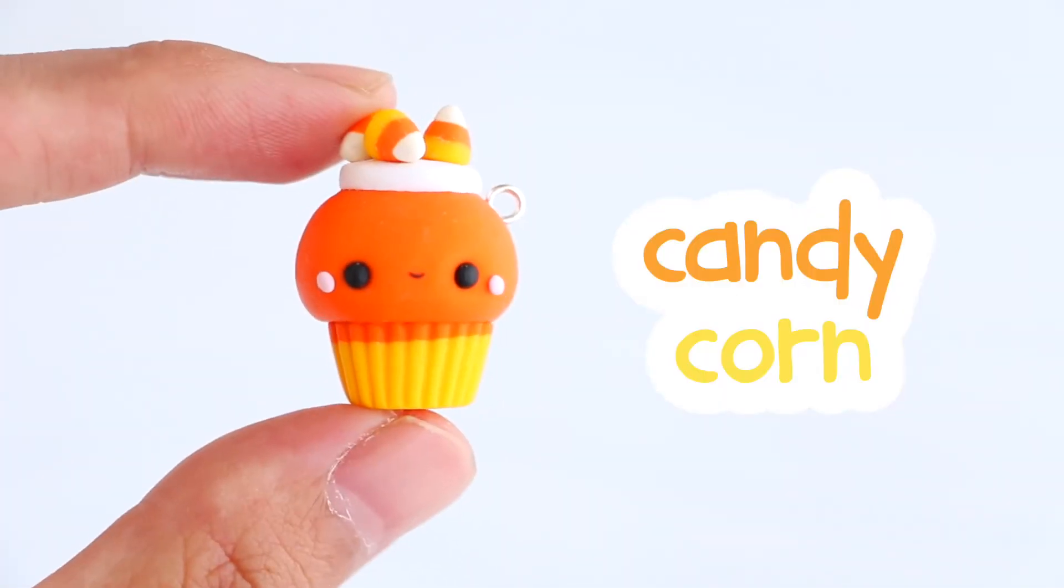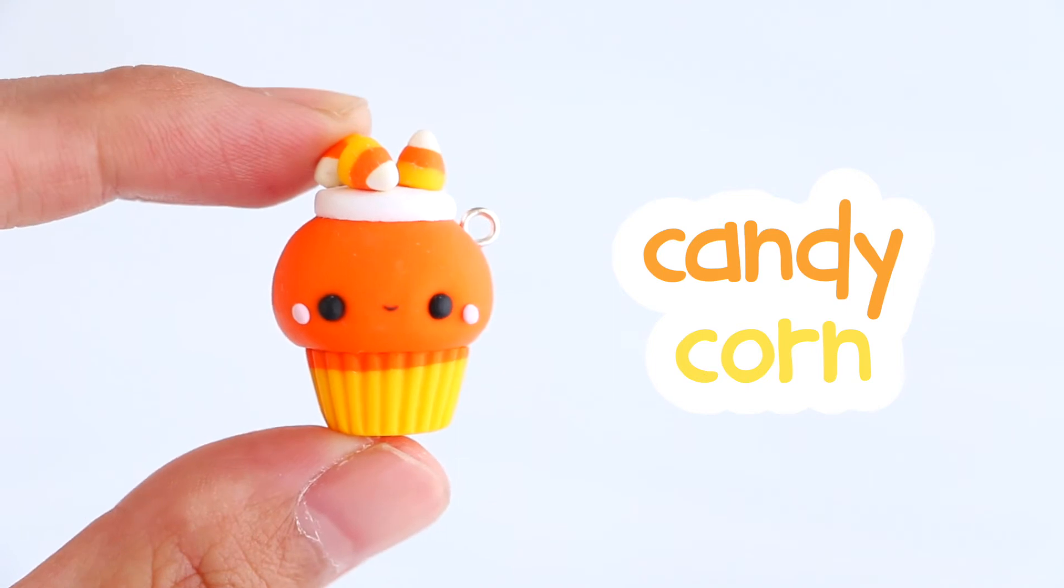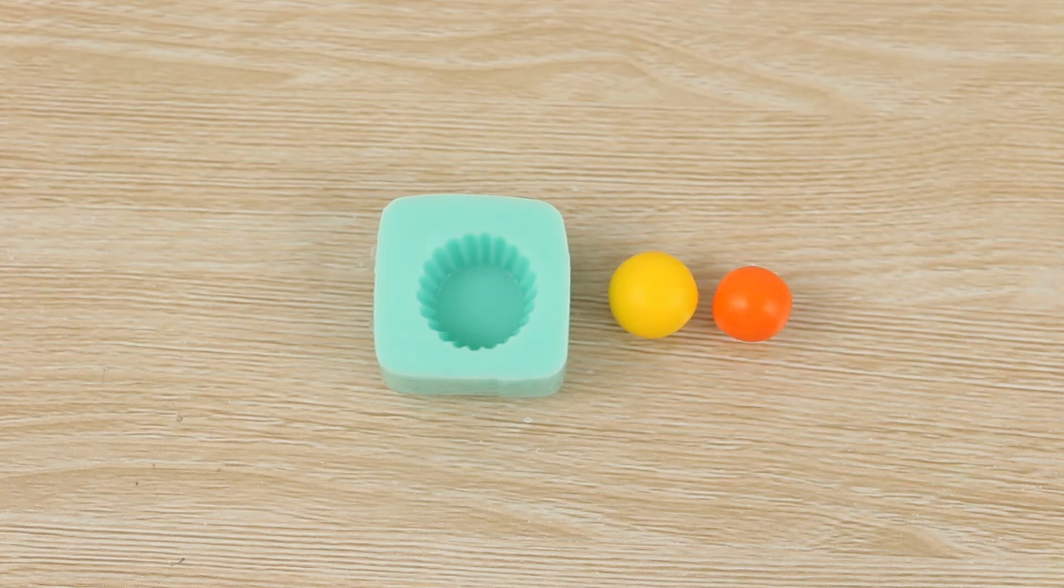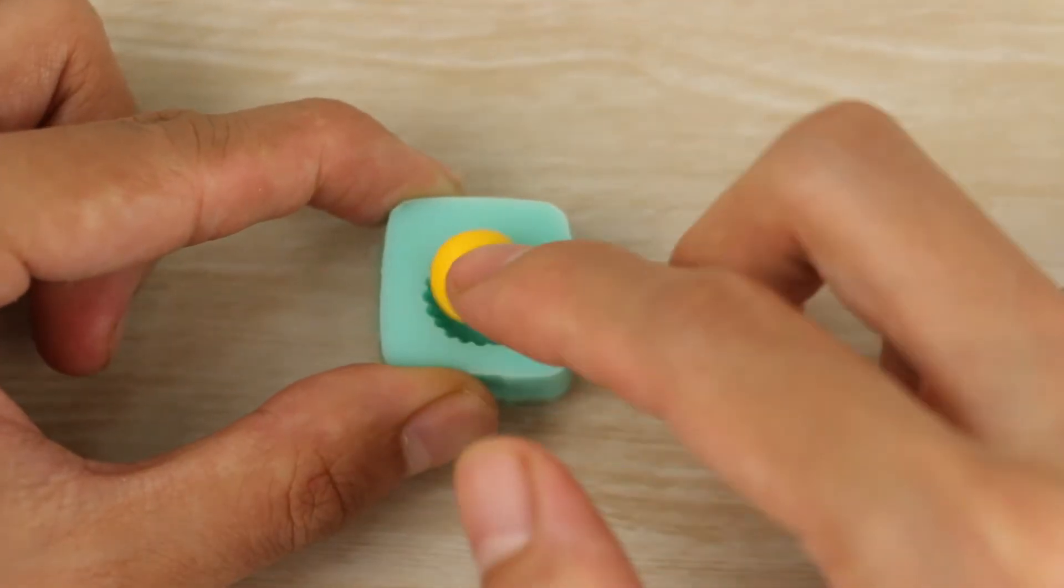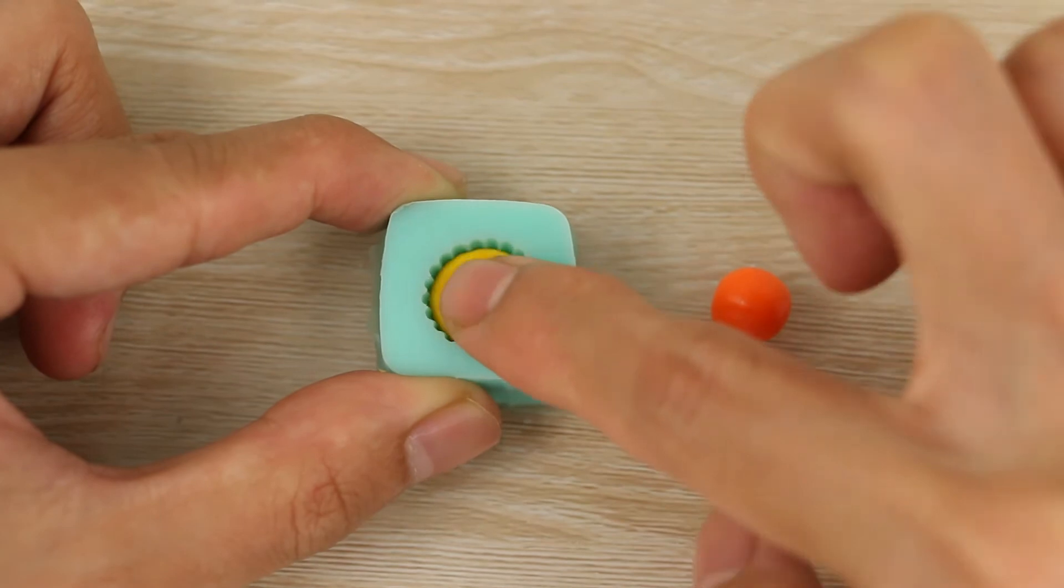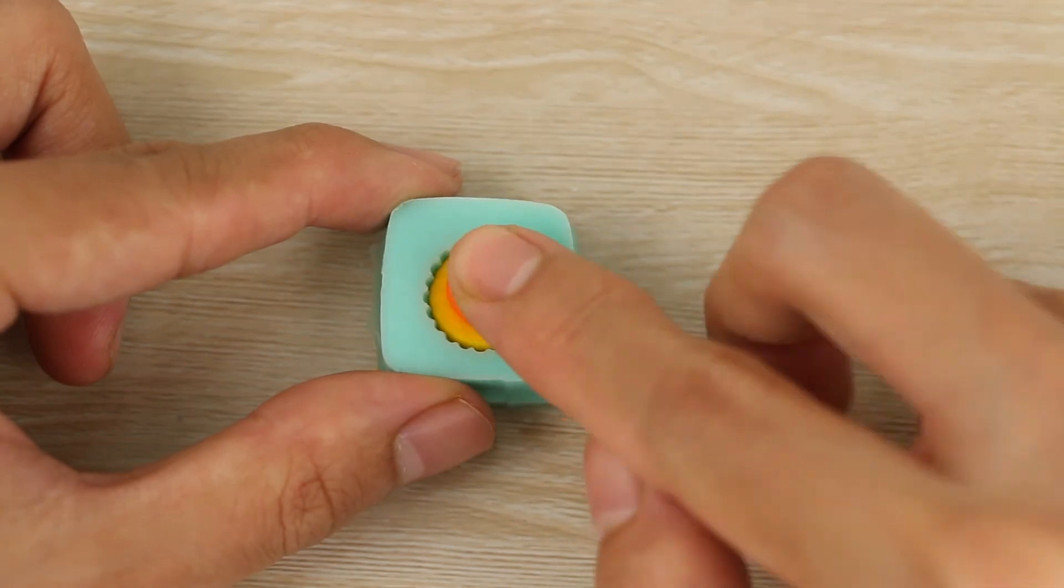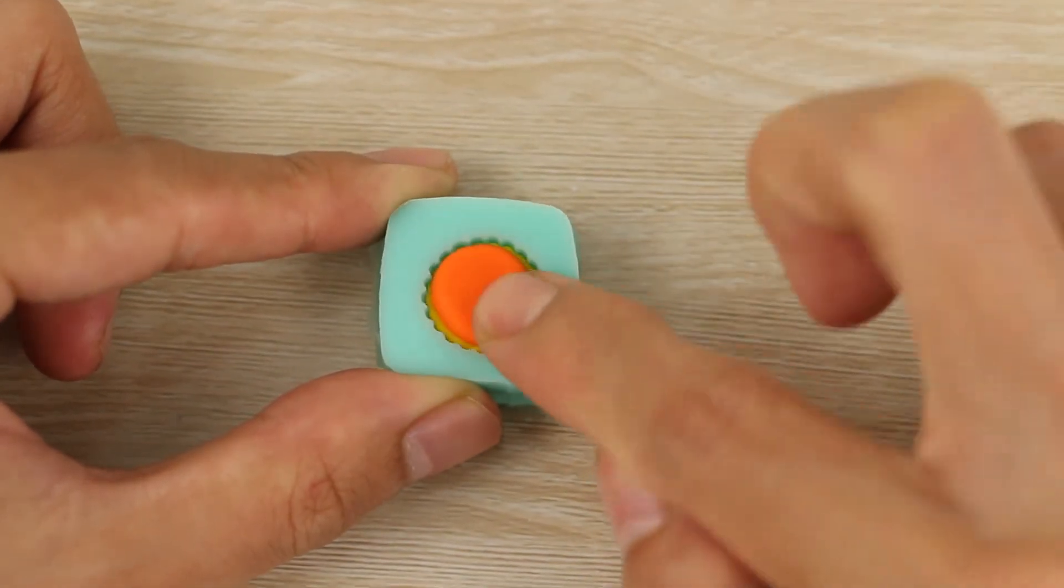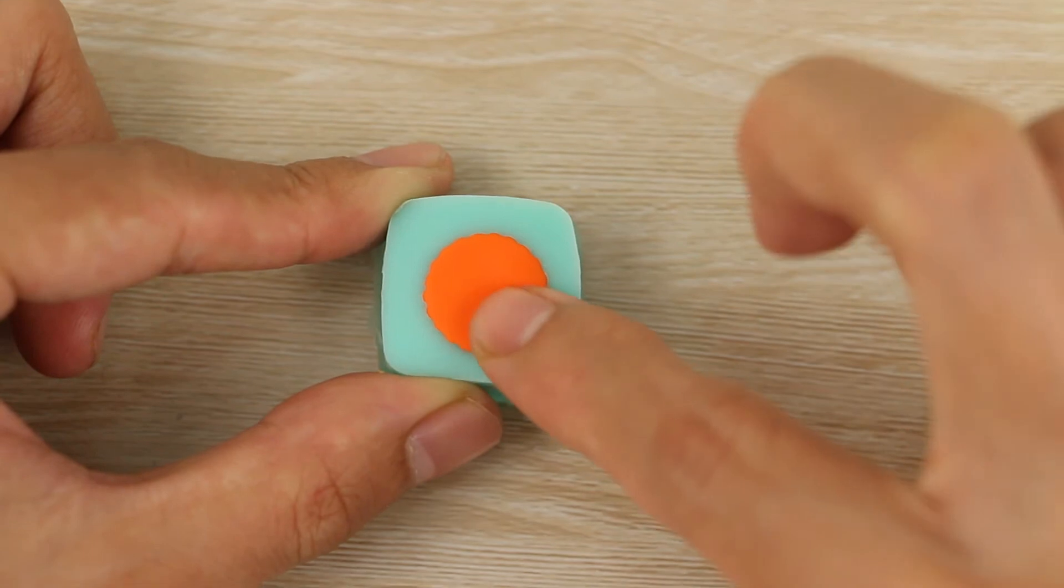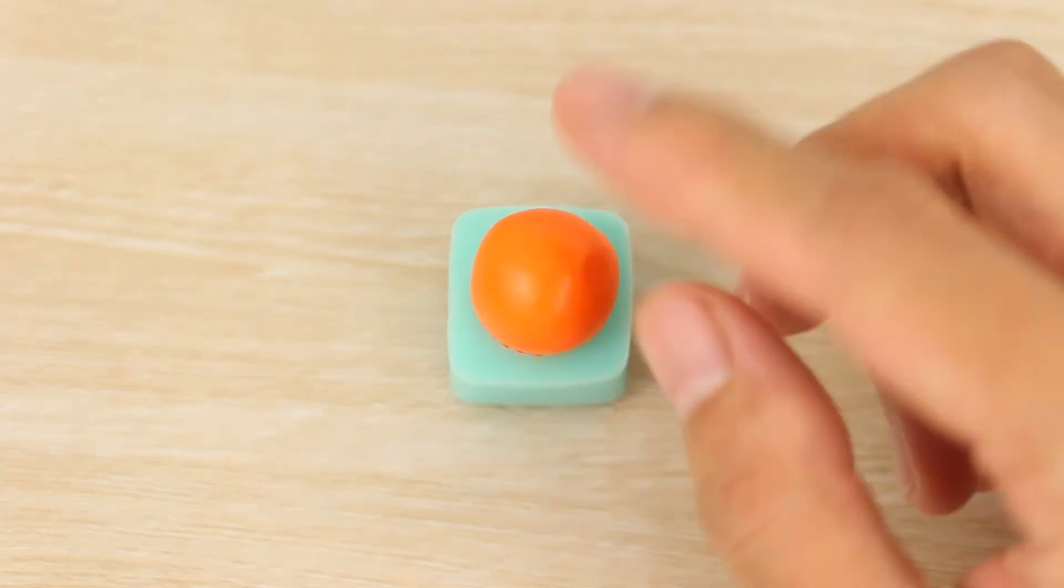Next is a candy corn cupcake. To fill the mold I'm using two colors starting with yellow. I'm adding this to the bottom of the mold and really squishing it in well, and then the orange goes on top. For the cupcake head I'm using the same orange color.